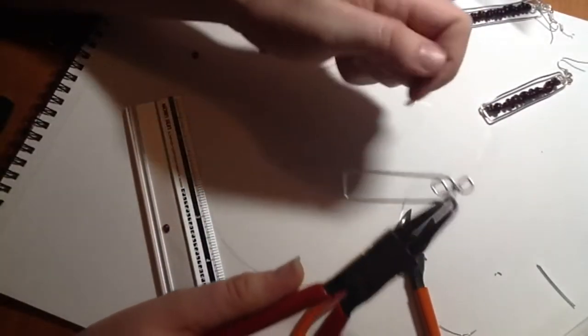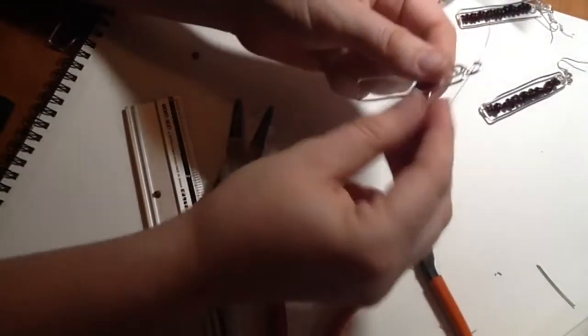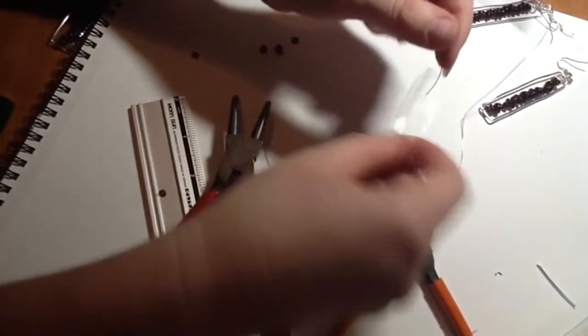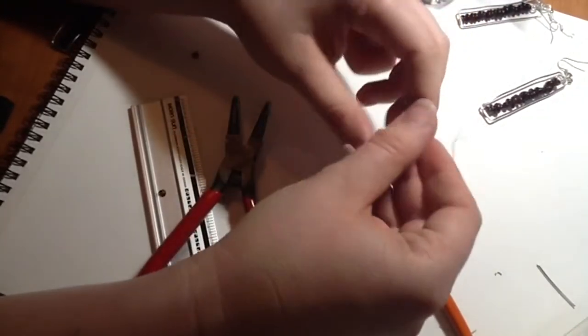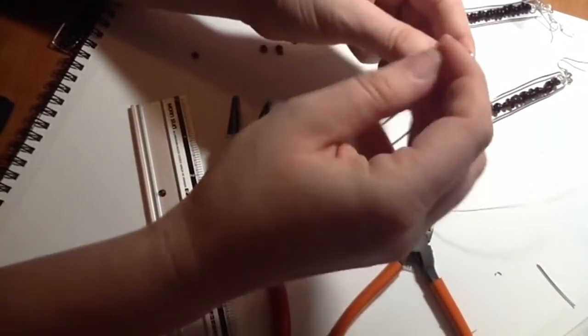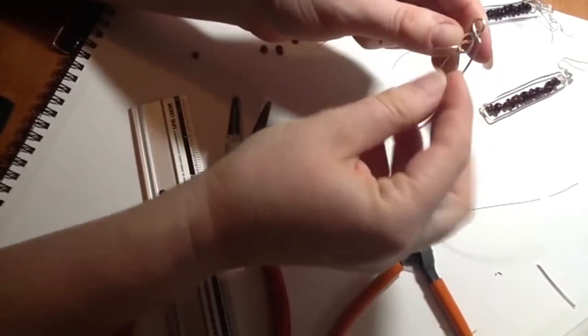Okay, so we've got our frame happening now. Now what I'm going to do is anchor my wire to my loop in the bottom. I'm going to wrap that around about four times.